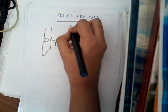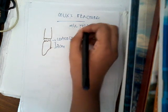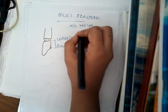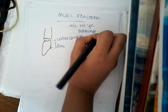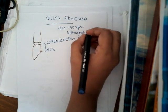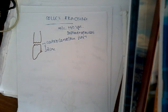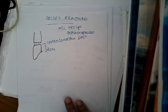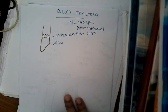This fracture is most common in people more than 40 years of age and also in post-menopausal women. The cause of Colles fracture is a fall on the outstretched hand.